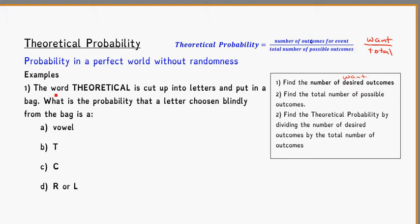So as an example, the word THEORETICAL is cut up into letters and put in a bag. What is the probability that the letter chosen blindly from the bag is a vowel? Well, the first thing that I need to do is to figure out the desired outcome here. And what I want is how many vowels. So I need to figure out how many vowels are in the word theoretical. So let's count them out. We have one, two, three, four, five. Five vowels.